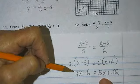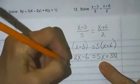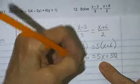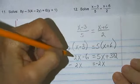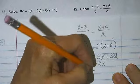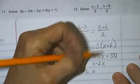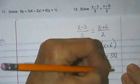2x on this side, 5x on this side. This one is bigger, so I subtract 2x from each side. 2x minus 2x is 0. That leaves me with negative 6 is equal to 5x minus 2x is 3x plus 30.